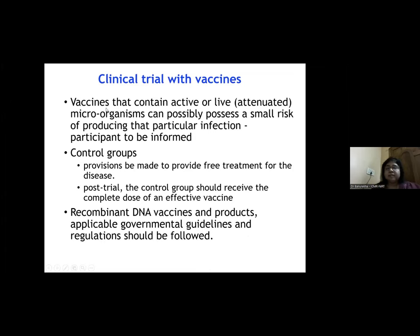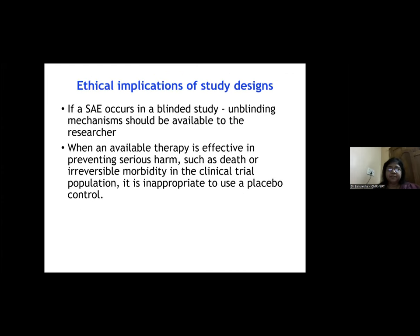For vaccine trials, some vaccines may contain active or live attenuated microorganisms that carry a small risk of producing infection, and participants must be informed before the trial. Control groups must be provided free treatment for the disease. In post-trial arrangements, the control group should receive the complete dose of the effective vaccine — for example, in COVID-19 vaccine trials where those in the placebo arm should receive the effective vaccine once it is found to be effective.